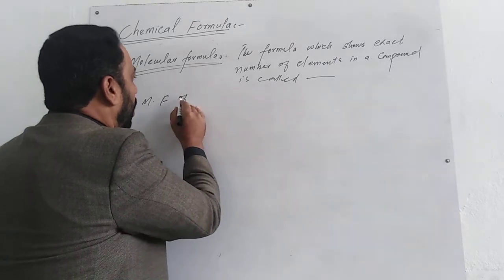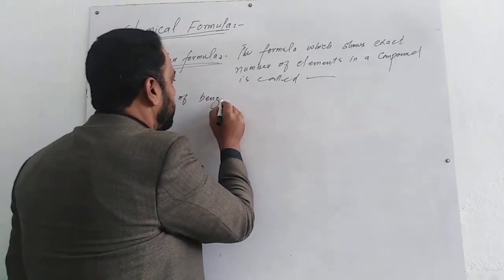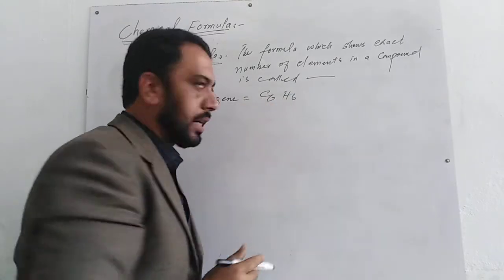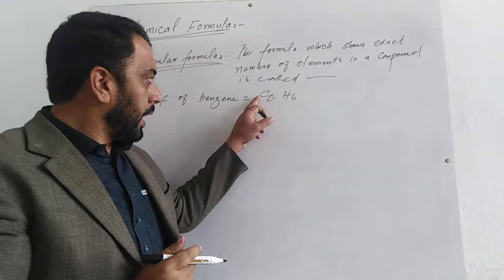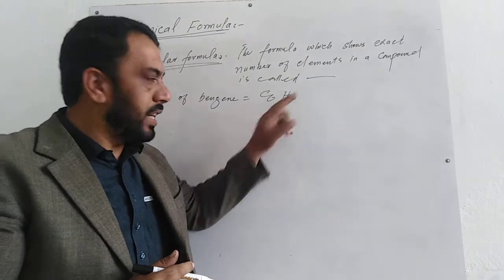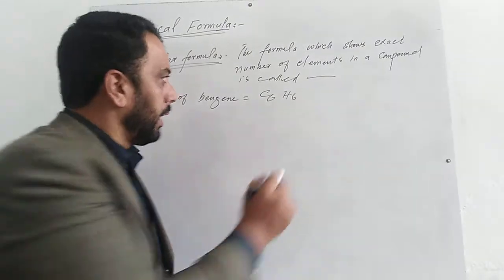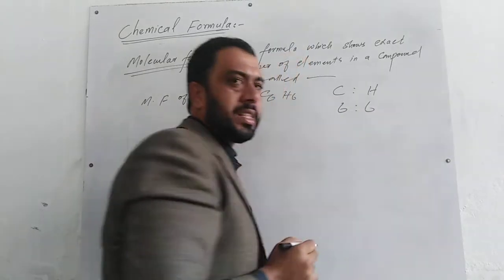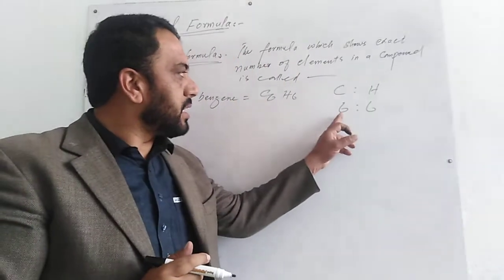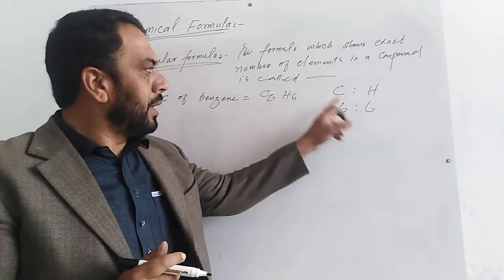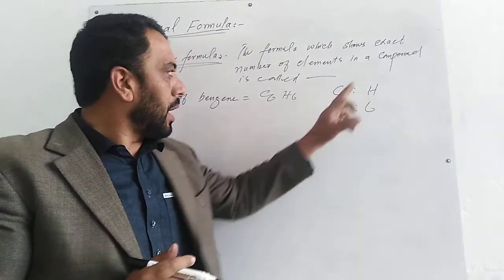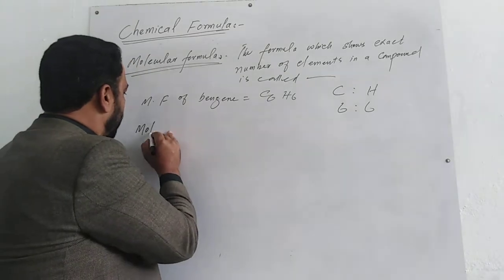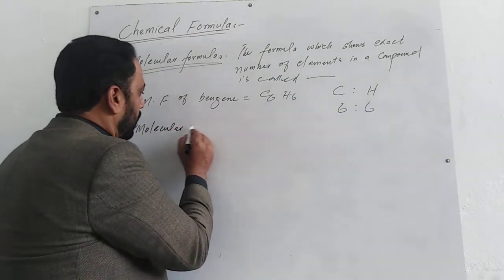Molecular formula of benzene جو ہمارے ساتھ برابر ہے C6H6. It tells us کہ اس میں 6 carbon ہے اور 6 hydrogen ہے. Carbon اور hydrogen atoms کی ratio 6:6 ہے، which is the exact number of carbon and exact number of hydrogen.